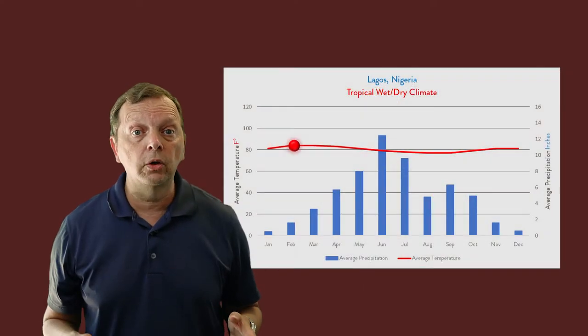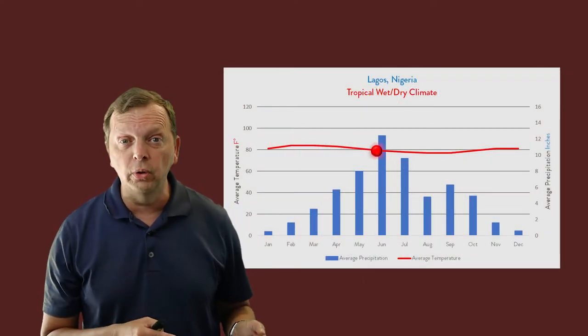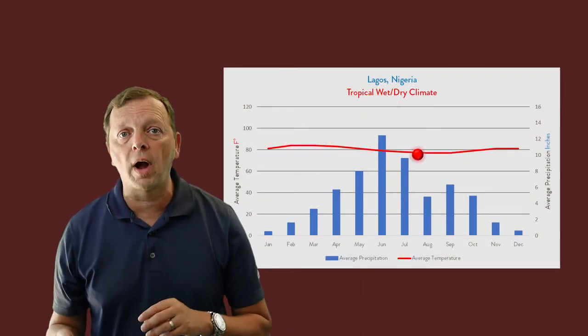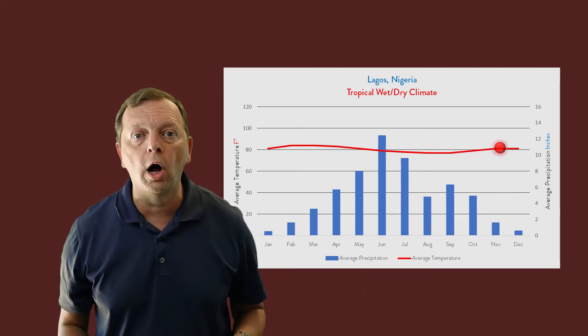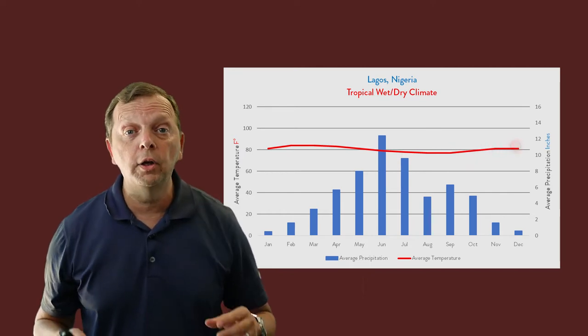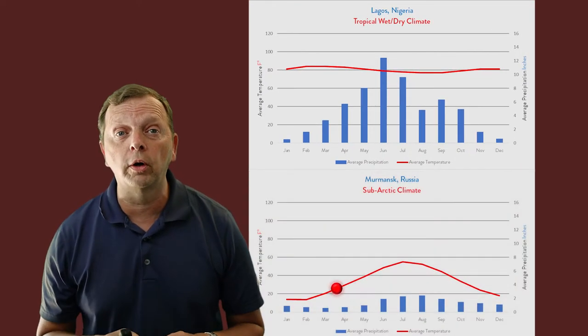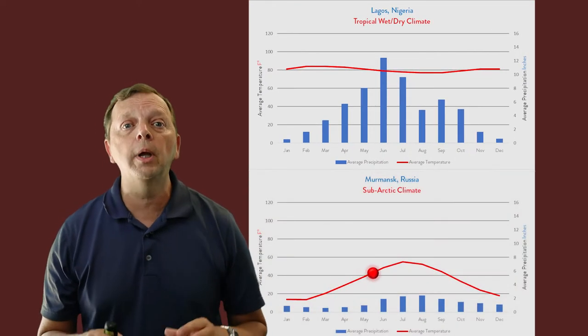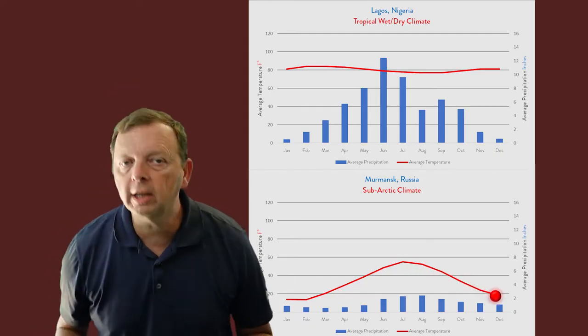This is why Lagos, Nigeria, which is in the low latitudes, also known as the tropics, will be warm all year long. However, if you go to Mimask, Russia, which is north of the Arctic Circle, the temperature year-round will be much, much colder.